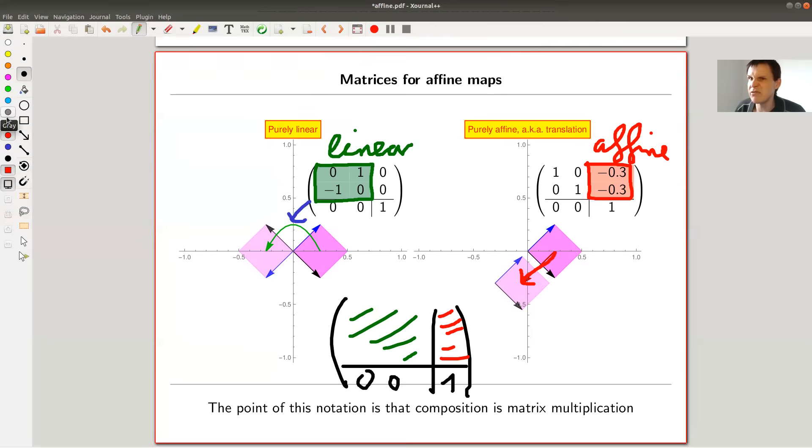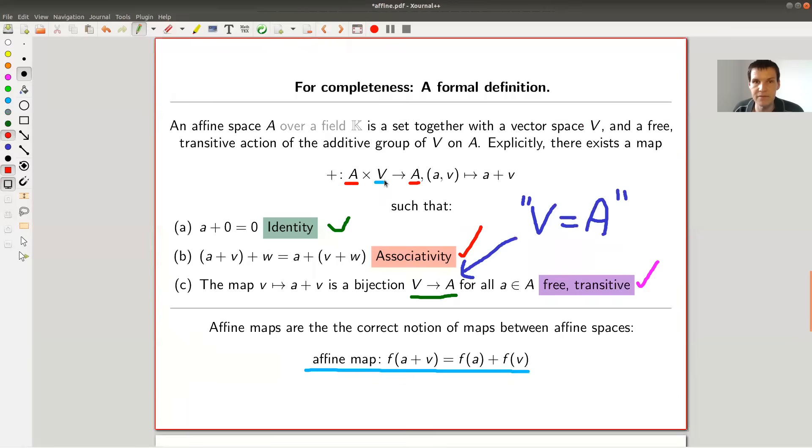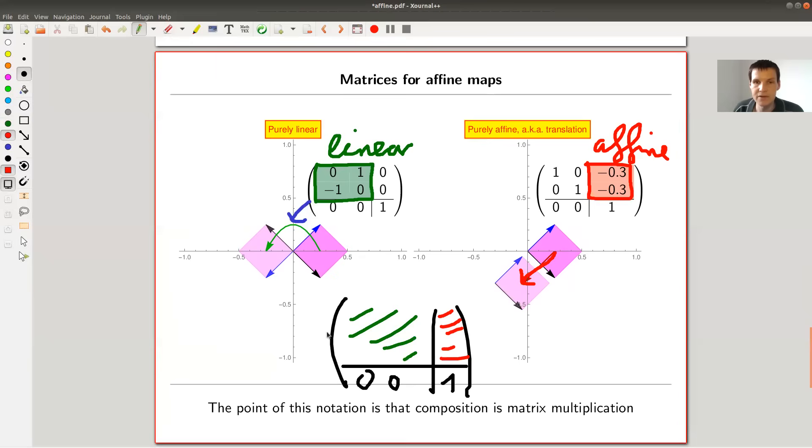That seems pretty natural, right? You have a translation and you have a linear map. So the linear map acts on V, and the translation acts on A. And the only reason for this funny notation with this funny extra row here is that in this notation, composition is matrix multiplication. So that's why I do it.